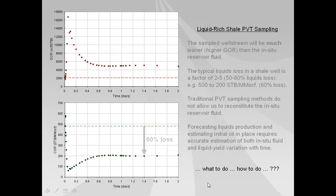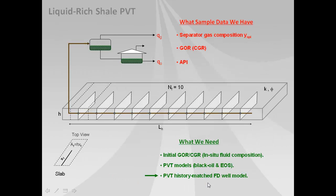So what to do and how to do it? Well first we have to actually build a finite difference, finely gridded well model to history match the actual PVT and test performance during sampling.